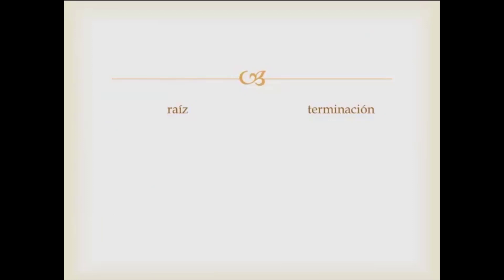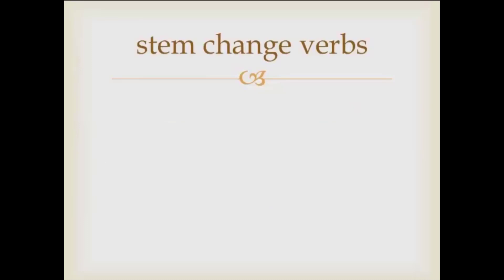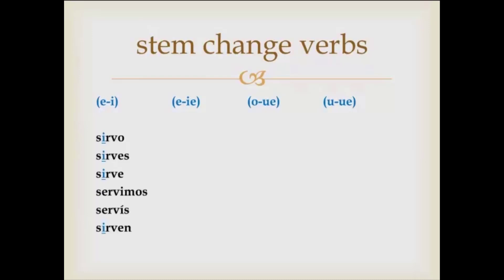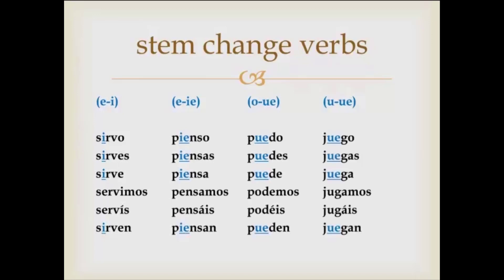So to recap, we have the raíz and the terminación — like hablar, comer, and vivir. Normally the raíz, also called the radical, will not change. AR, ER, and IR are the endings. Normally it's just the terminación that's going to change. But in this case we have four stem-changing categories: e to i, e to ie, o to ue, and u to ue. You can see how they stem-change, and how they do not stem-change in the nosotros and vosotros form. That's the lesson. You will find more verbs throughout the semester that fit the first three categories — e to i, e to ie, and o to ue — and jugar is the only one that fits in the last category. That's your lesson: stem-changing verbs.